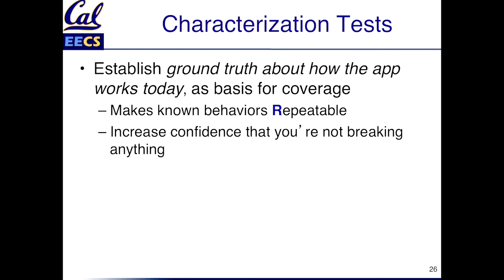Their goal is to establish the ground truth about how the app works right now, even if it's buggy, even if it's incomplete. But it gives you a basis for test coverage and it makes known behaviors repeatable. The idea is that you get more confident that you're not going to break anything. Because once you've watched customers interact with the app and done some interactions yourself, your goal is to essentially mechanize that — capture it in a repeatable way using whichever of Cucumber or RSpec is more appropriate for the task at hand. That's how you bootstrap yourself into having some tests from a state where you have no tests.